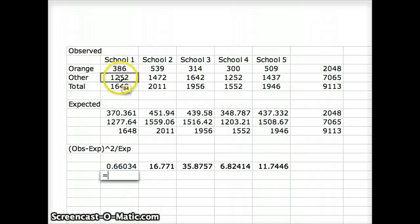We do the same thing with our second row. Equals the observed number, 1,262, in parentheses first. 1,262 minus the expected number, 1,277.64, squared, divided by the expected number. Then we will scroll that all the way across.